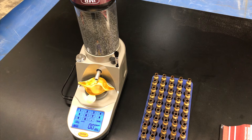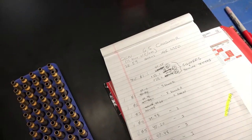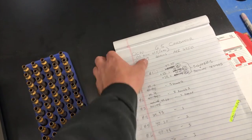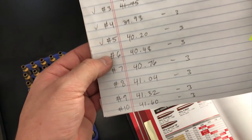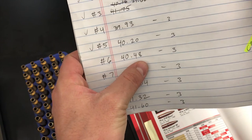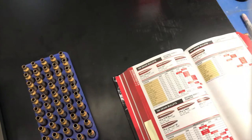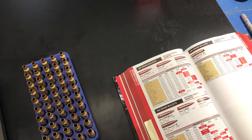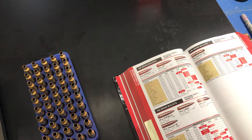So basically we've already done our load development and what we did was an OCW, optimum charge weight development. Another option is a ladder test, but we did an OCW. For more information on an OCW I'll probably make another video about that or you could check out some other links that I'll put in the description below.